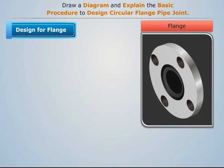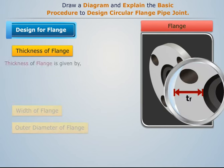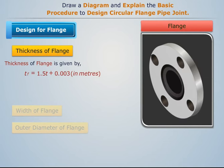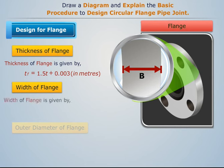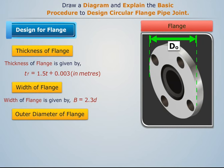Now let's design the flange. For this we need to determine the thickness of the flange, width of the flange, and outer diameter of the flange. The thickness of the flange, width of the flange, and outside diameter of the flange are each given by their respective formulas.